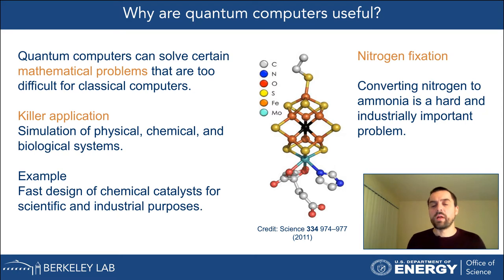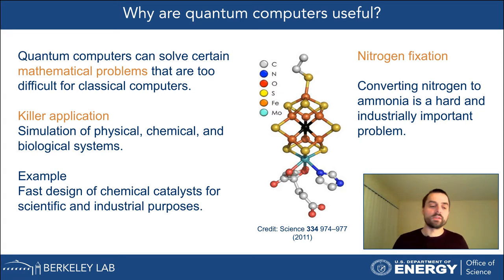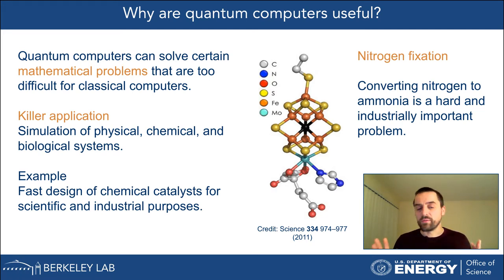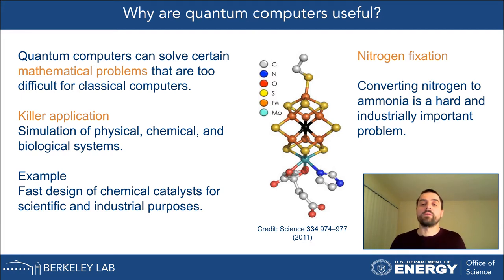First, I want to discuss briefly why we think quantum computers are useful. They can solve certain mathematical problems that are too difficult for classical computers — there is no hope classical computers could ever solve these problems. A killer application is simulation of physical, chemical, and biological systems, especially quantum mechanical systems. For example, designing catalysts for chemistry is a computationally very hard problem, and this is one field where quantum computers are going to be useful.